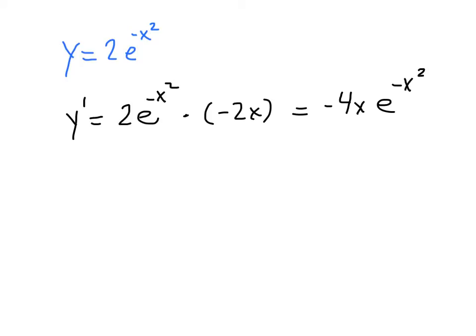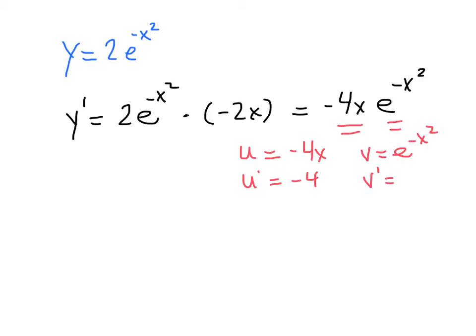To find the second derivative, we're going to need to use the product rule, because we have negative 4x, which is a function, times e to the negative x squared, which is a function. For the product rule, our strategy is to break those factors into u and v. So u equals negative 4x, and u prime is negative 4. Then v is e to the negative x squared, and v prime is negative 2x times e to the negative x squared.